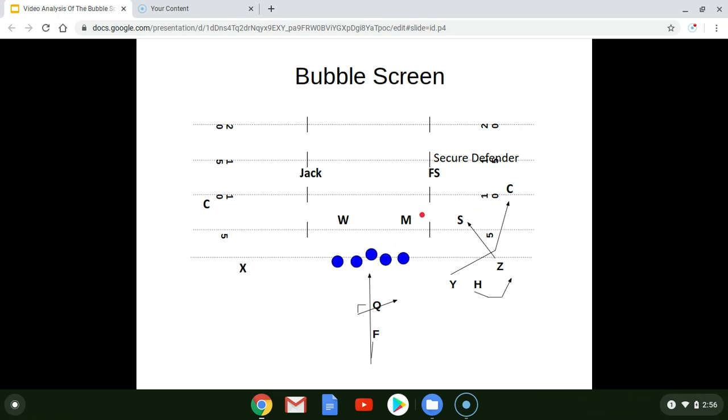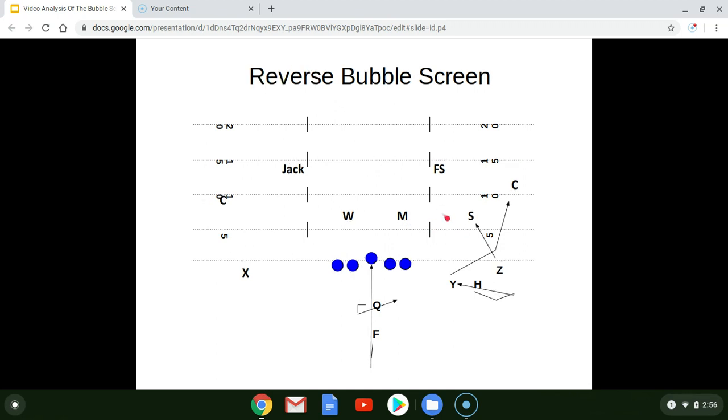Now, the problem is that once the Sam gets out of this gap where he's aligned and he hops over the top, then they have given up this area of grass between about the top of the numbers to the hash mark. And that's what brings us to the next reaction to the play. We call a reverse bubble.